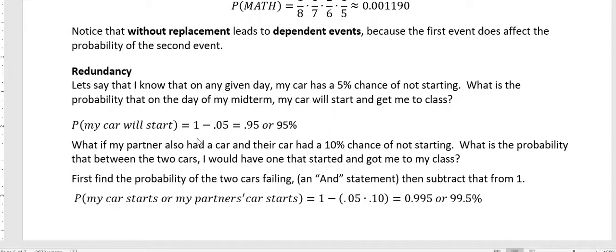What if my partner also had a car and their car had a 10% chance of not starting? What is the probability that between the two cars, I would have one that started and got me to class? First, find the probability of the two cars failing. That's an AND statement. And then subtract that from 1.